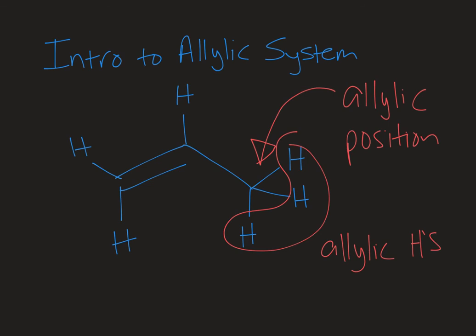The double bond next door is sometimes referred to as a vinyl group and so you might see the protons that are on the actual double bond referred to as vinylic protons. So the allylic position is the position adjacent to a pi bond.